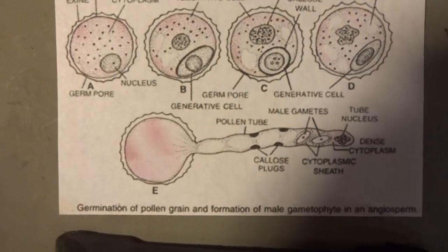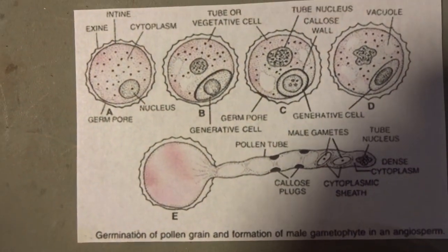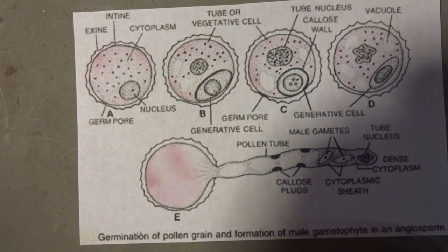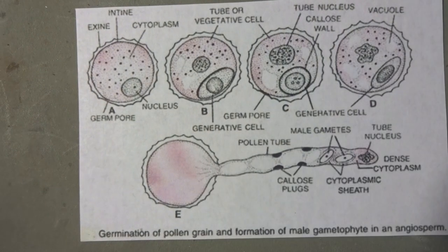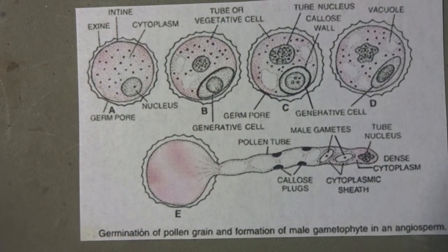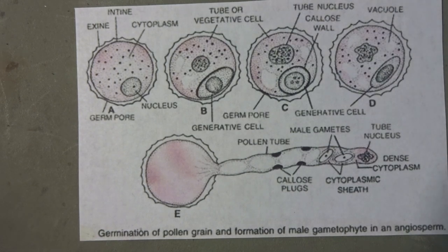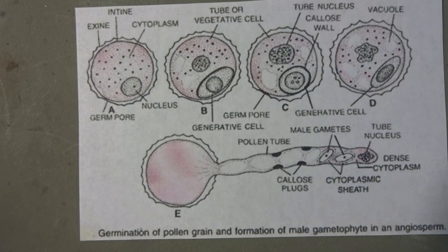This is a diagram of one single pollen particle. Notice how intricate it is and how many different regions there are to this pollen. Pollen is a microscopic fine to coarse powdery substance created by seed plants as part of their reproductive process. Even though it is very small, it is multicellular and consists of many structures.